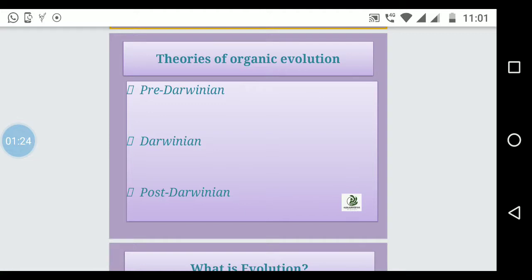What are the theories? Pre-Darwinian theory, Darwinian theory, Neo-Darwinian, and Post-Darwinian theory.